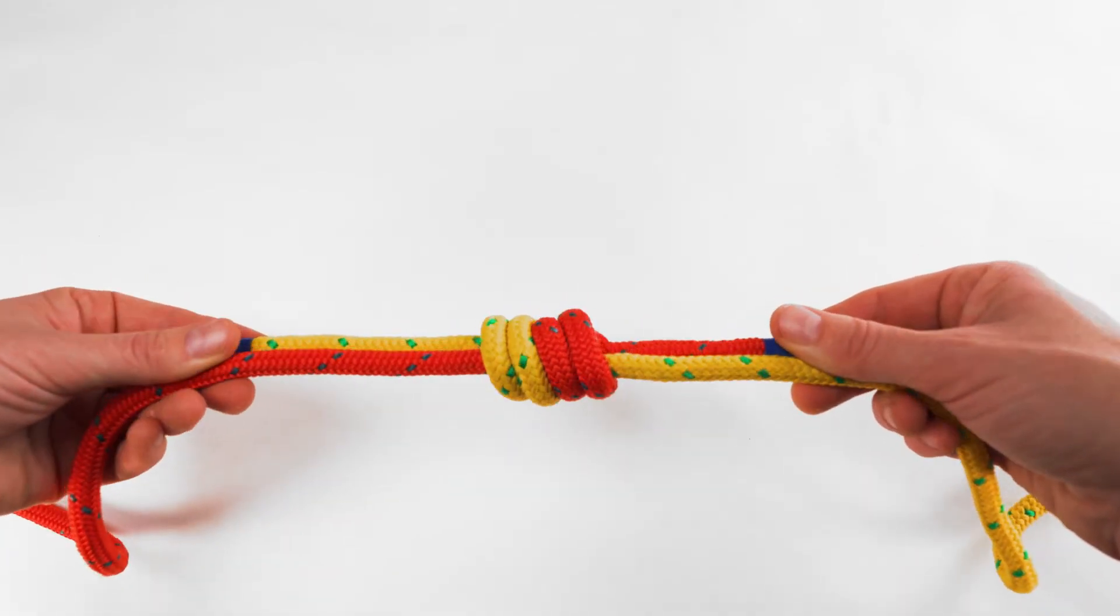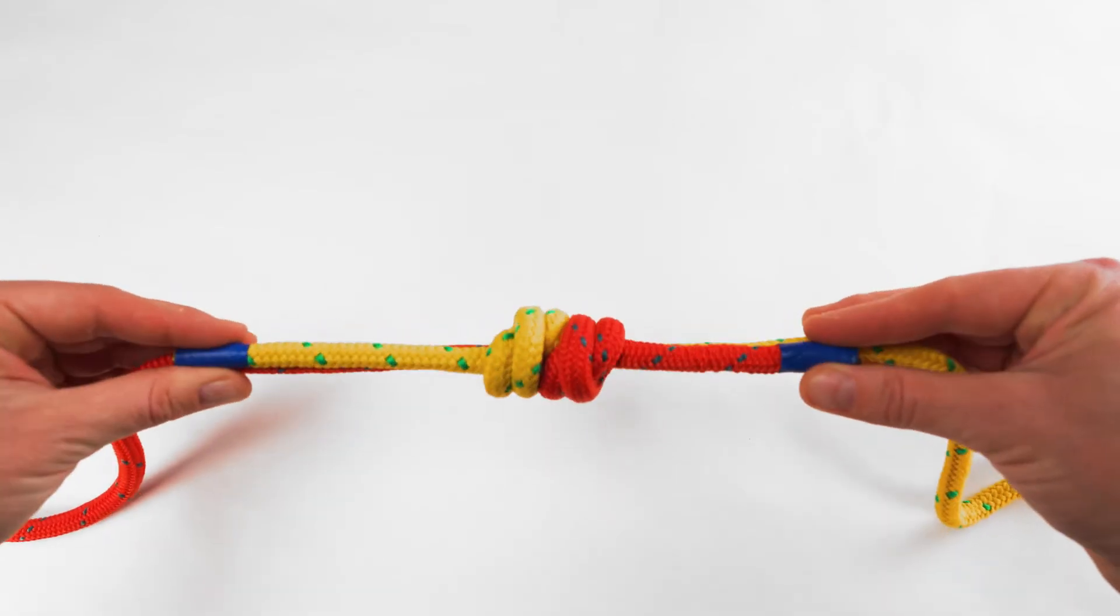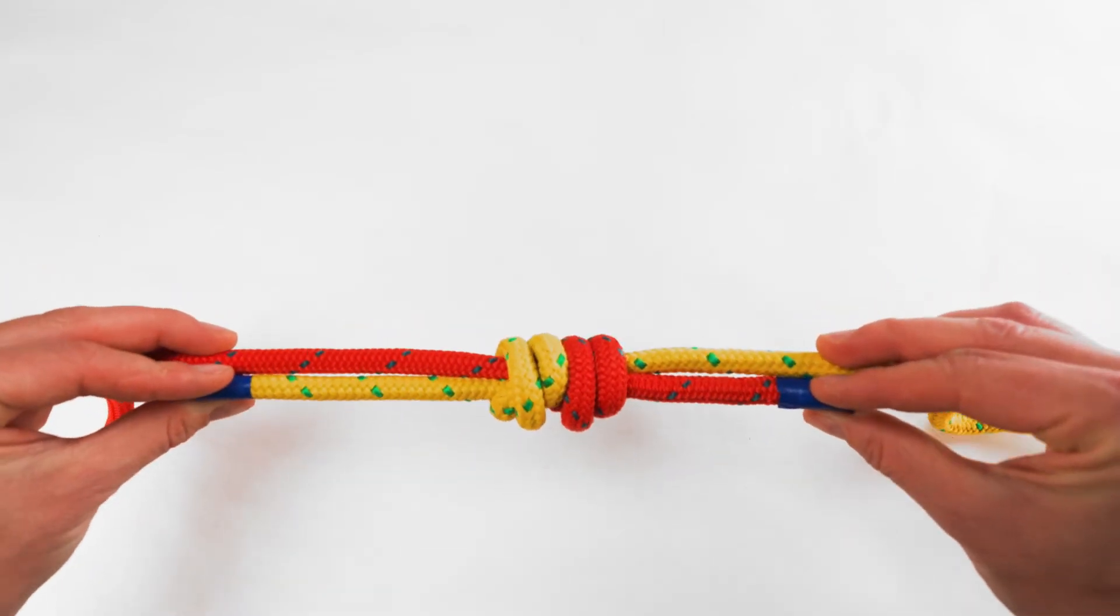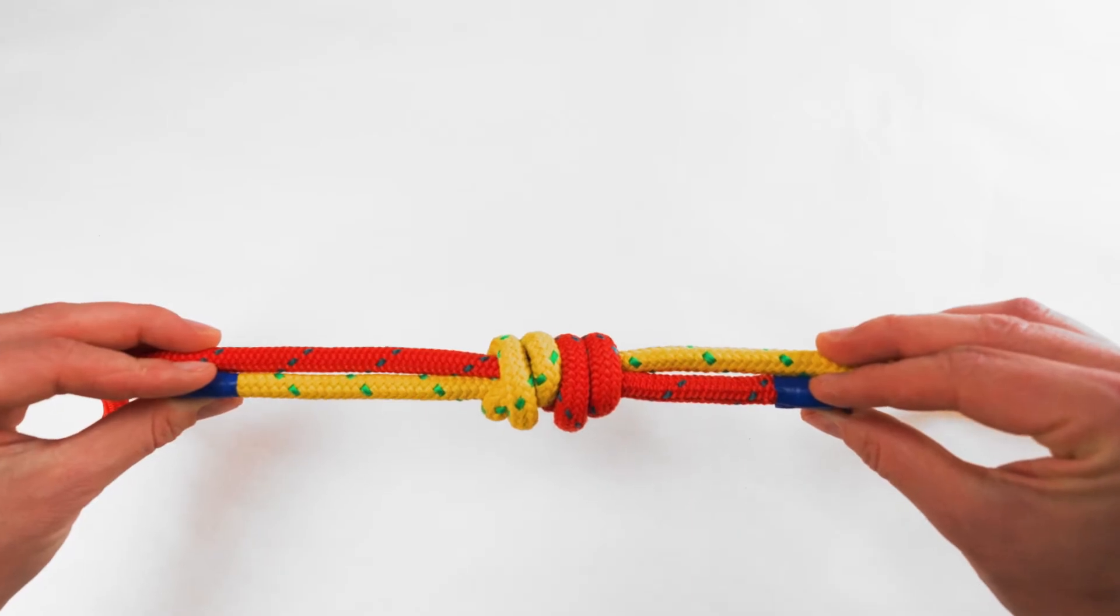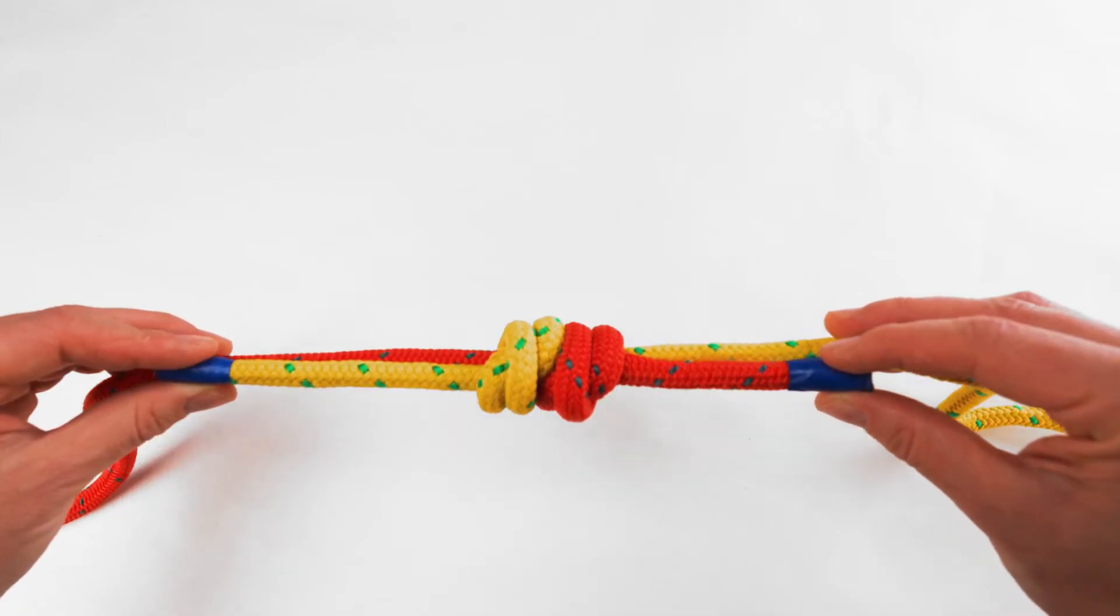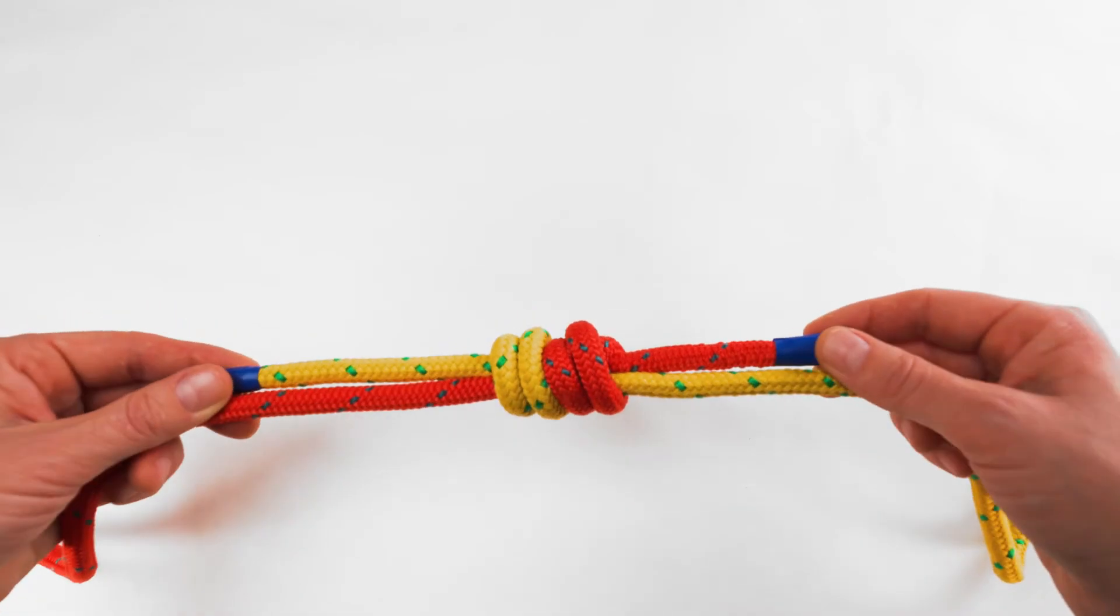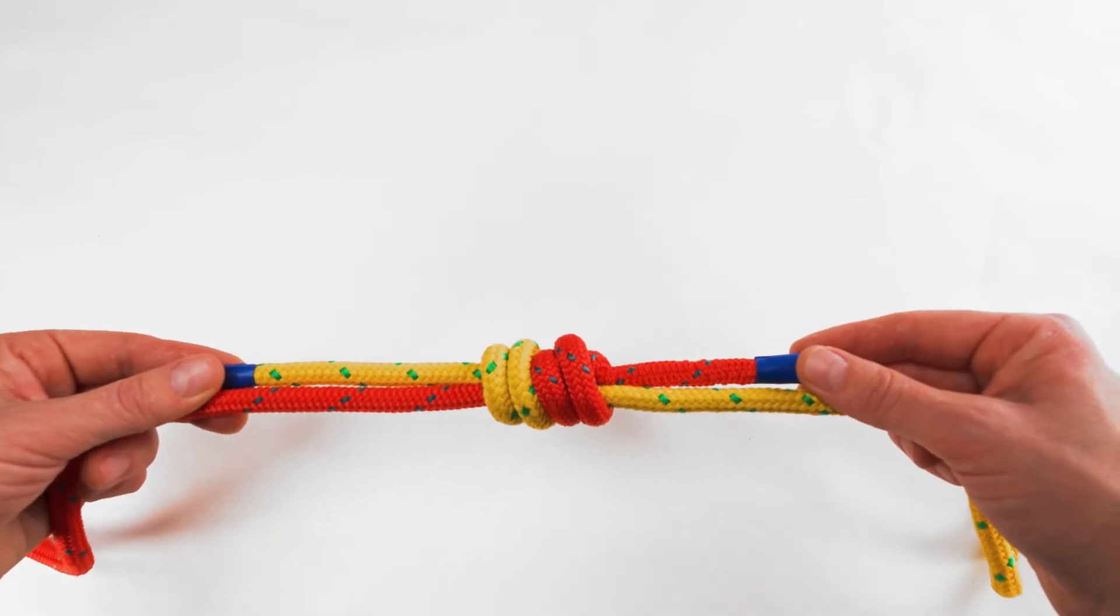This knot is an excellent and reliable way of joining the ends of two similar sized ropes. It is also the way to join two ends of a line to form a prussic loop. It can be very difficult to untie once loaded.